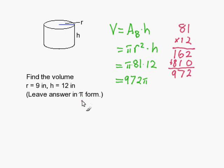If I was asked to multiply it out, I would just multiply this answer, 972, by 3.14. But since I'm not, I'm just going to leave it in this pi form.